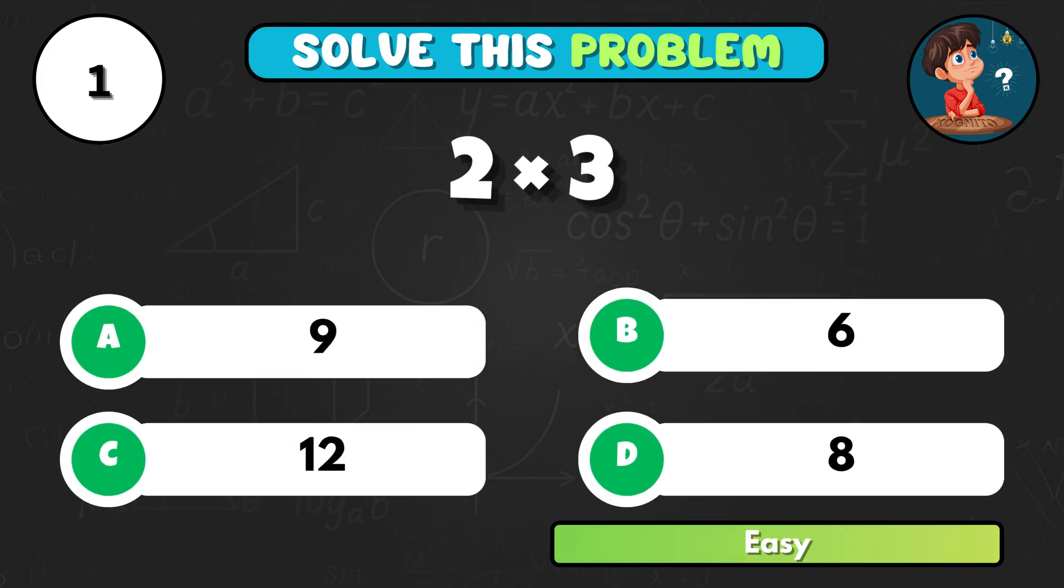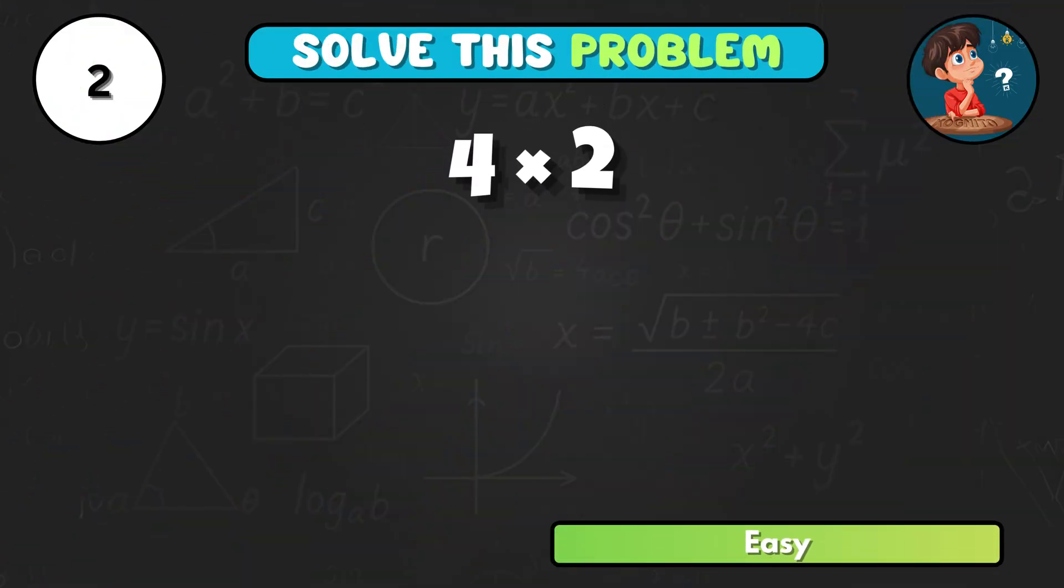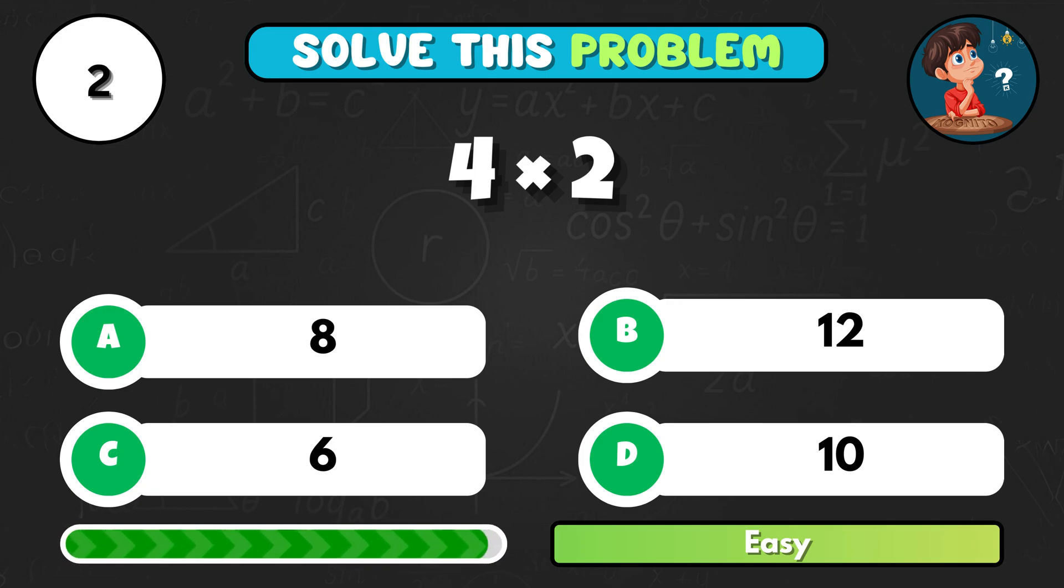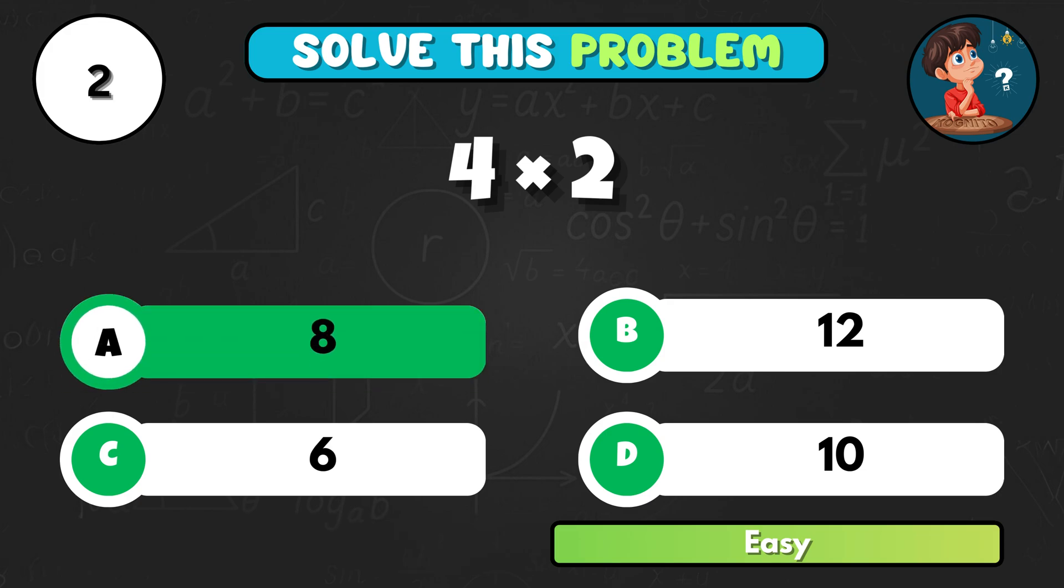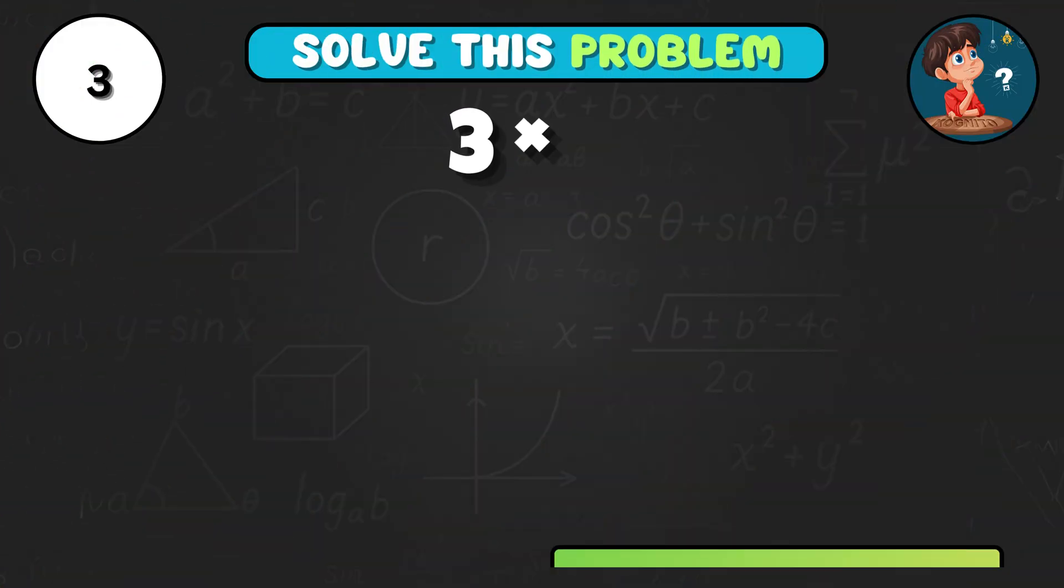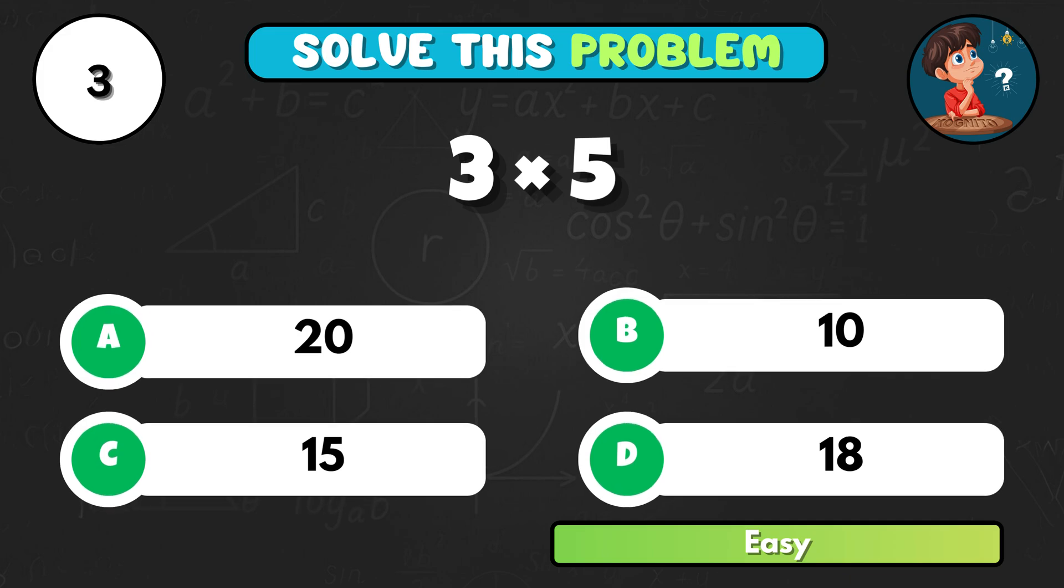What's 2 times 3? That's B, 6. Quick one. Can you solve 4 times 2? It equals A, 8. Here's a classic. What is 3 times 5? The answer is C, 15.